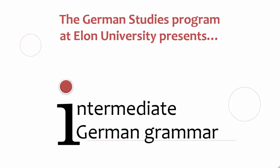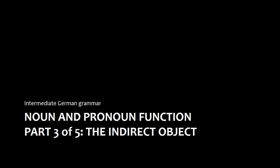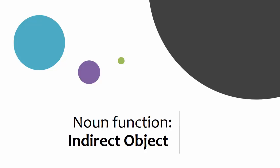Welcome to Intermediate German Grammar, presented by the German Studies Program at Elon University. This video is part three of a five-part series on noun and pronoun function. In the first two videos in this series, we looked at the subject and the direct object. The next logical step is to look at the indirect object.